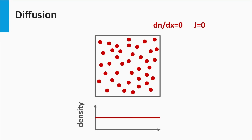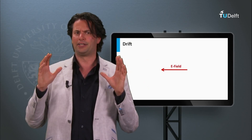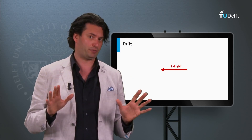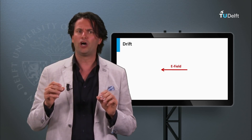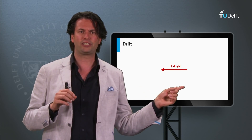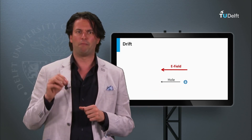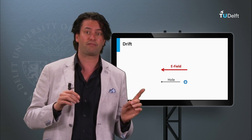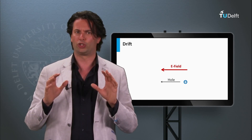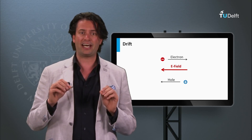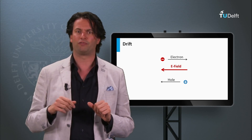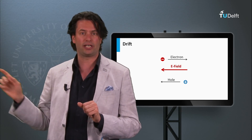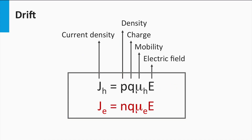The same equation is valid for holes. The diffusion of holes results in a net movement of holes to the location with lower hole densities. Now we move to the second transport mechanism, which is called drift. Charged particles like electrons and holes can also be moved under the influence of an electric field. If a positively charged hole is positioned in an electric field pointing to the left, it will experience an electric force in the direction of the electric field and will start moving to the left. A negatively charged electron will experience a force in the opposite direction and will start moving to the right. The current density induced by an electric field is given by the product of the density of electrons N, the electron charge Q, the mobility constant μ, and the electric field E.